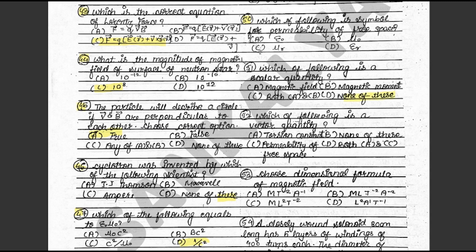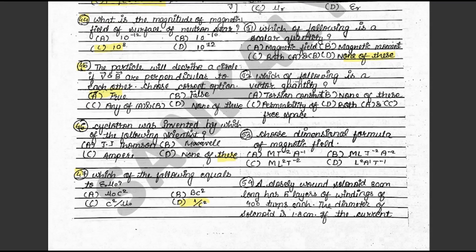Question 52: Which of the following is a vector quantity? The answer is B: none of these. This is on textbook page 168. Question 53: Choose the dimensional formula of the magnetic field. The answer is A: M T minus 2 A minus 1. This is on textbook page 168.